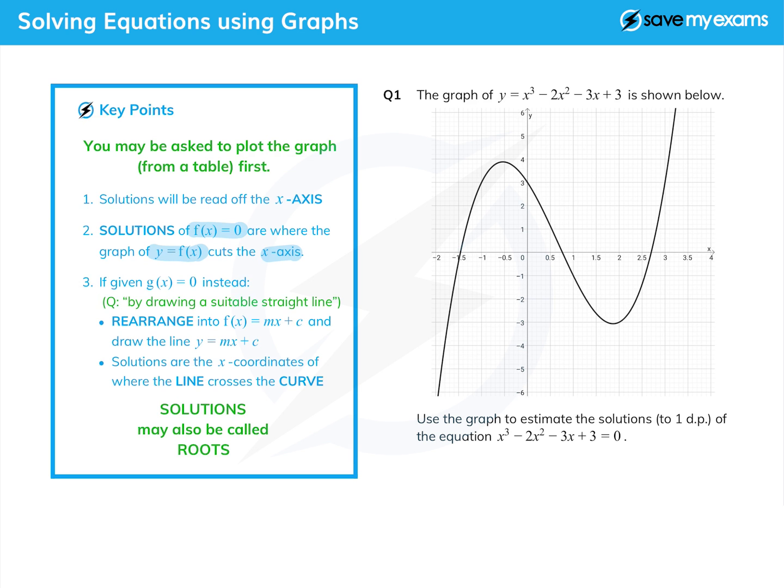We're going to pause there in our key points and actually do question one. We'll look at the next bit in a minute. So question one is just that we're given the graph of y equals x cubed minus 2x squared minus 3x plus 3 and asked to solve x cubed minus 2x squared minus 3x plus 3 equals 0.